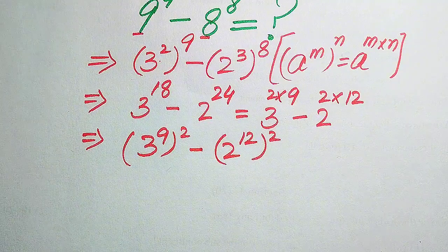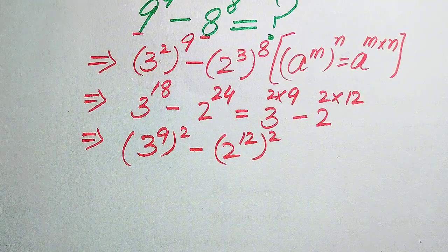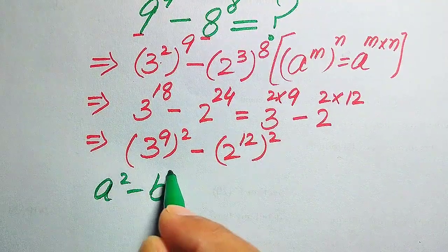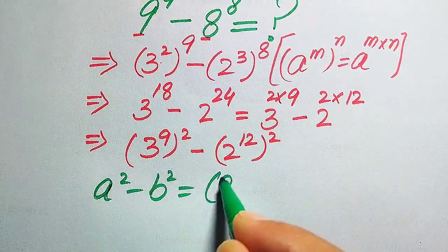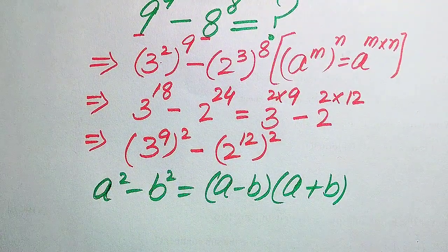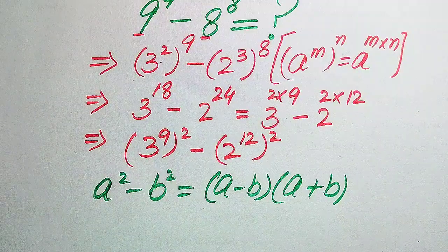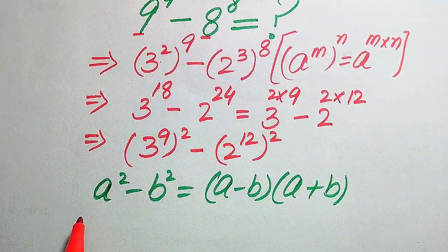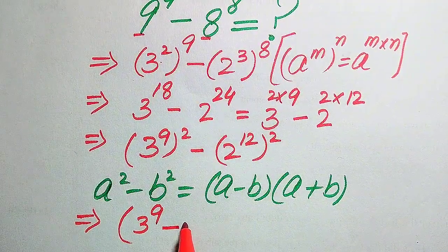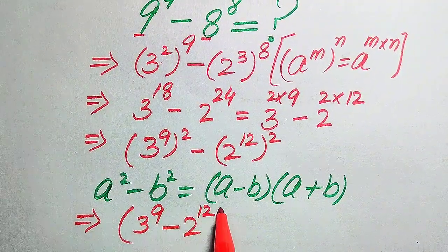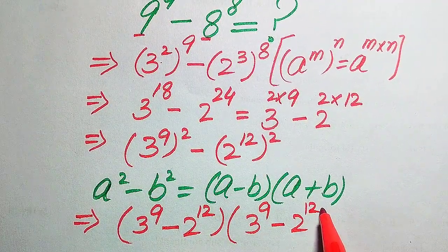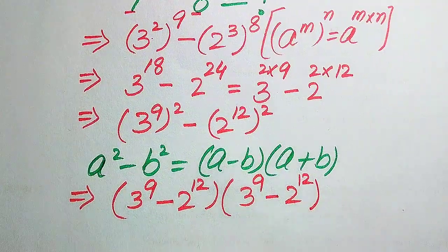In the next step we use the algebraic difference of squares formula: a squared minus b squared equals (a minus b) times (a plus b). According to this formula, our expression becomes: (3 to the power of 9 minus 2 to the power of 12) times (3 to the power of 9 plus 2 to the power of 12). Our next target is to find the values of 3 to the power of 9 and 2 to the power of 12.